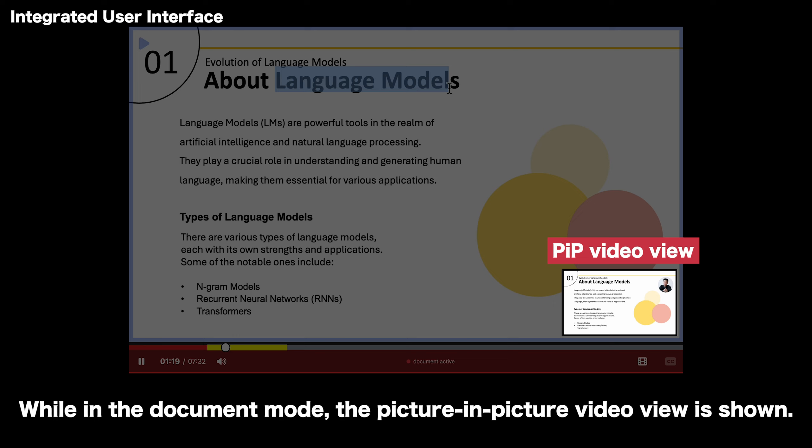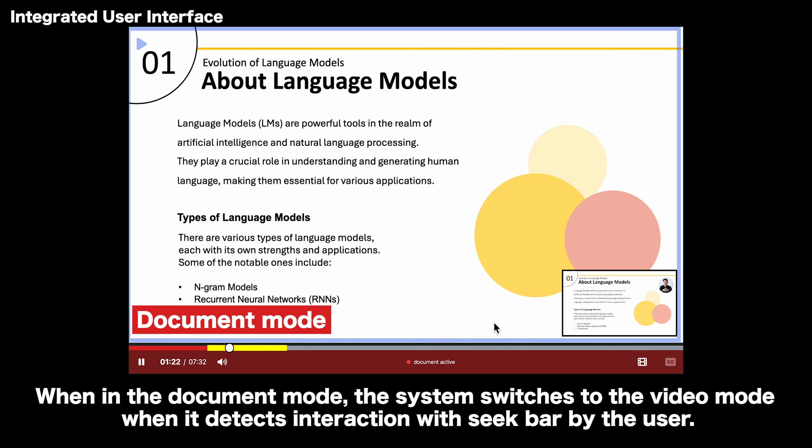While in the document mode, the picture in picture video view is shown. When in the document mode, the system switches to the video mode when it detects interaction with the seek bar by the user.